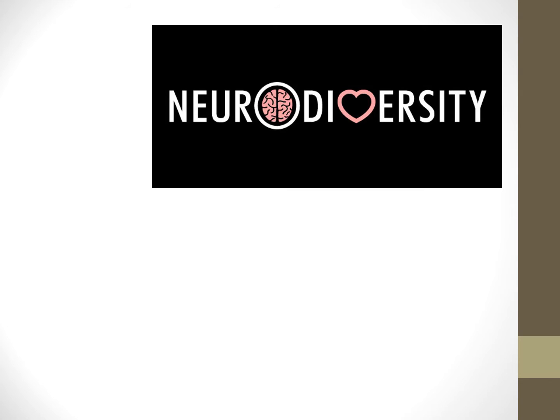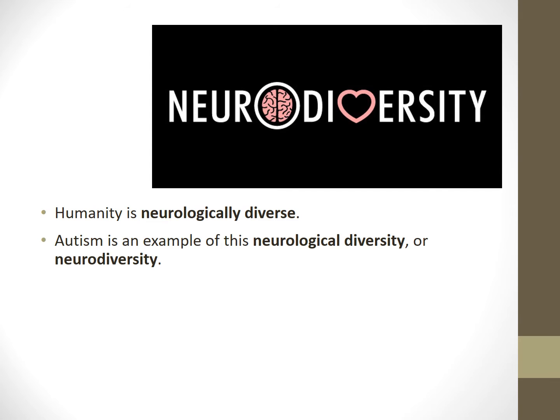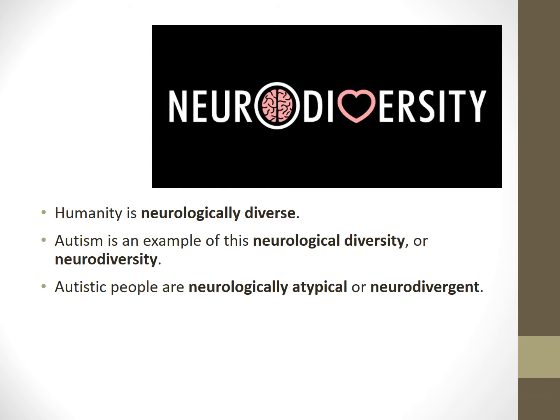For those of you who haven't heard it before, I'd like to introduce the concept of neurodiversity. This means that humanity — the human species — is neurologically diverse. Different people have different brain wiring. Autism is an example of this neurological diversity or neurodiversity. Autistic people are neurologically atypical or neurodivergent.